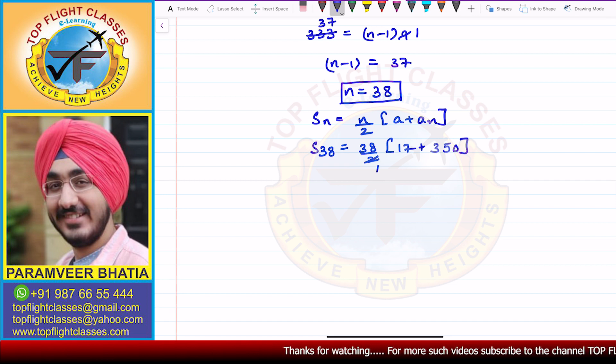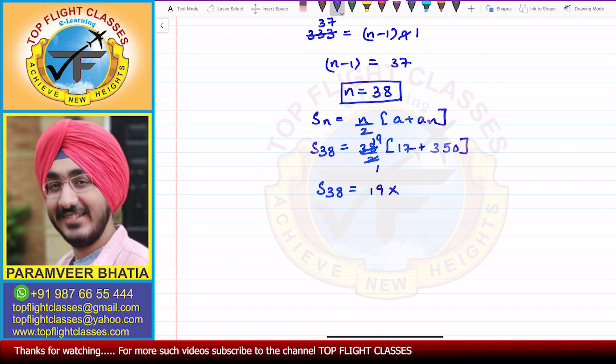So here we get S38 equals 19 multiplied by 350 plus 17, that is 367. So now 367 multiplied by 19: 9 times 7 is 63, 6 goes up, 9 into 6 is 54 plus 6 is 60, then 9 into 3 is 27 plus 6 equals 33.